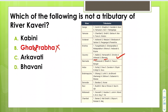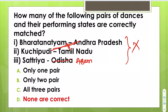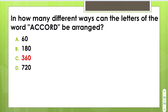How many of the following pairs of dances and their performing states are correctly matched? Bharatanatyam is a dance form of Tamil Nadu, Kuchipudi is of Andhra Pradesh, and Sattriya dance is not of Odisha but of Assam. All three pairs as given are wrong, so none are correct.